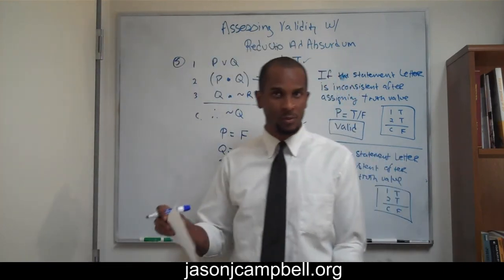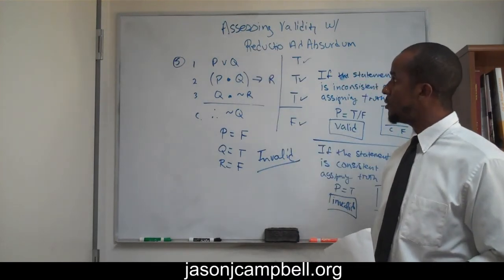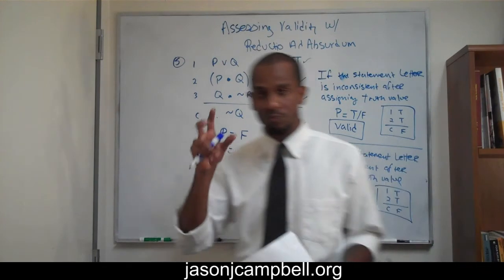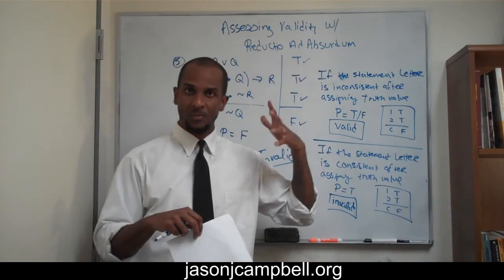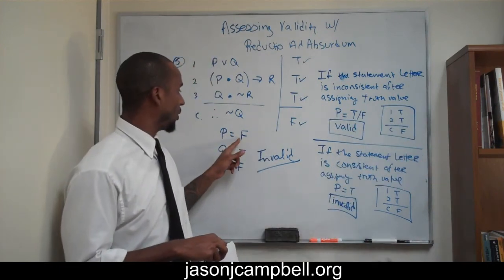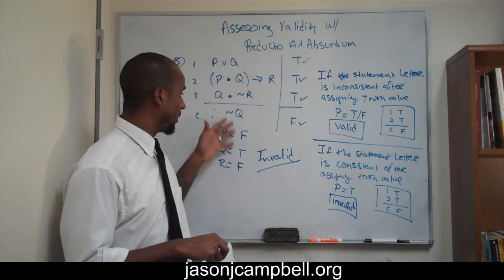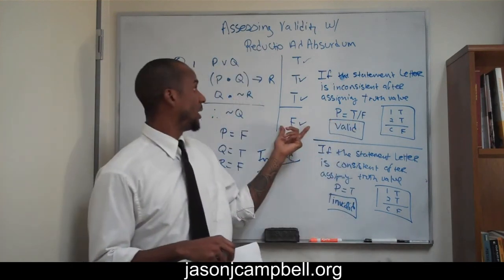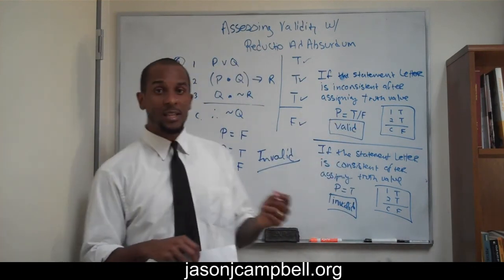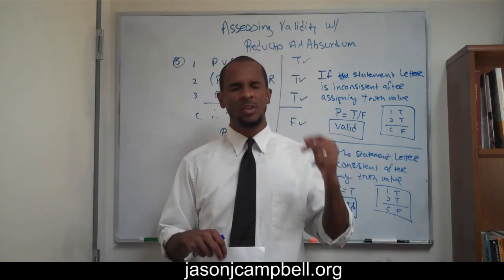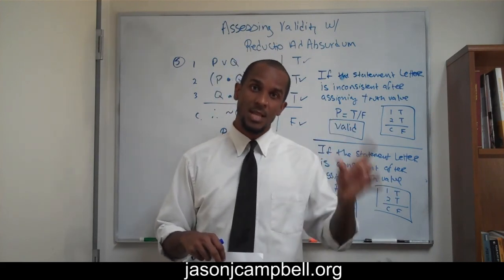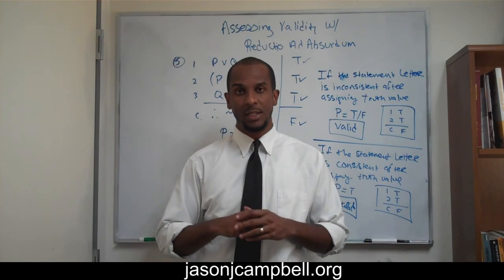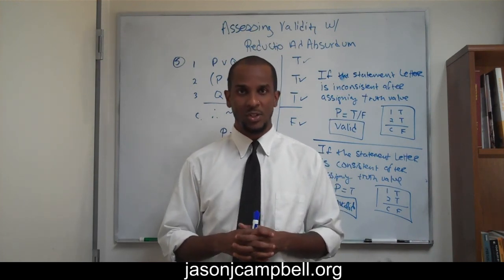The whole point of demonstrating these arguments was to show you that you can use reductio ad absurdum as a very simple way of assessing the validity of your arguments. All you need to do is recognize the relationship between each component part and the other statements, then substitute your truth function to that statement letter. If the truth function can be appropriated without inconsistency, the argument is invalid; if you must be inconsistent, the argument is valid. Hopefully that made reductio ad absurdum more accessible. I appreciate you watching. I'm Dr. Jason J. Campbell — thank you, and have a good day.